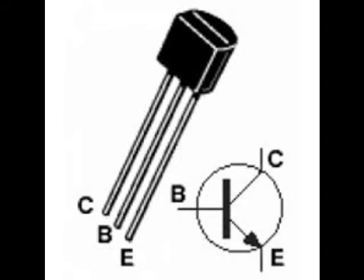Transistors can be used as voltage controlled switches and current amplifiers. They have three leads: a base, collector, and emitter.